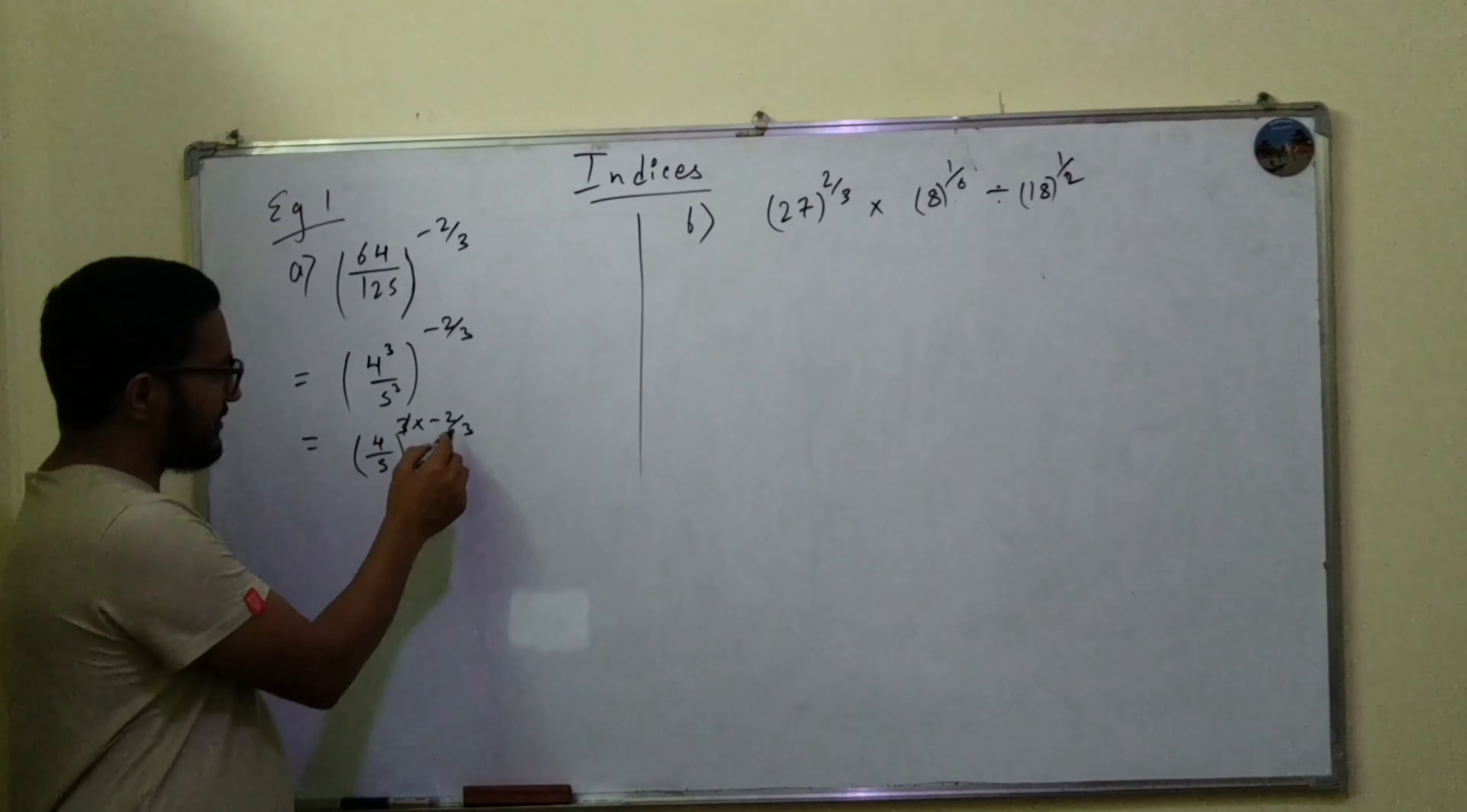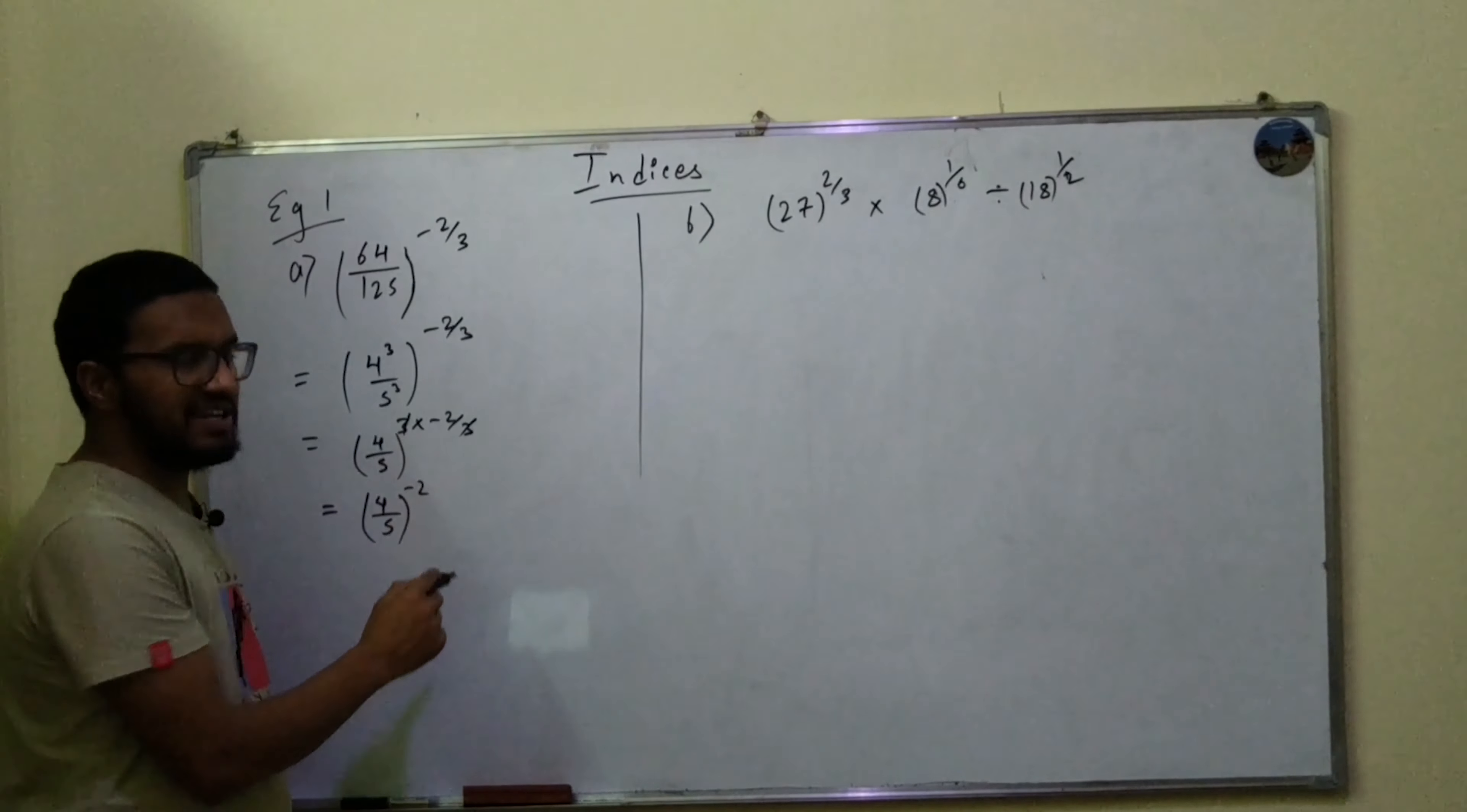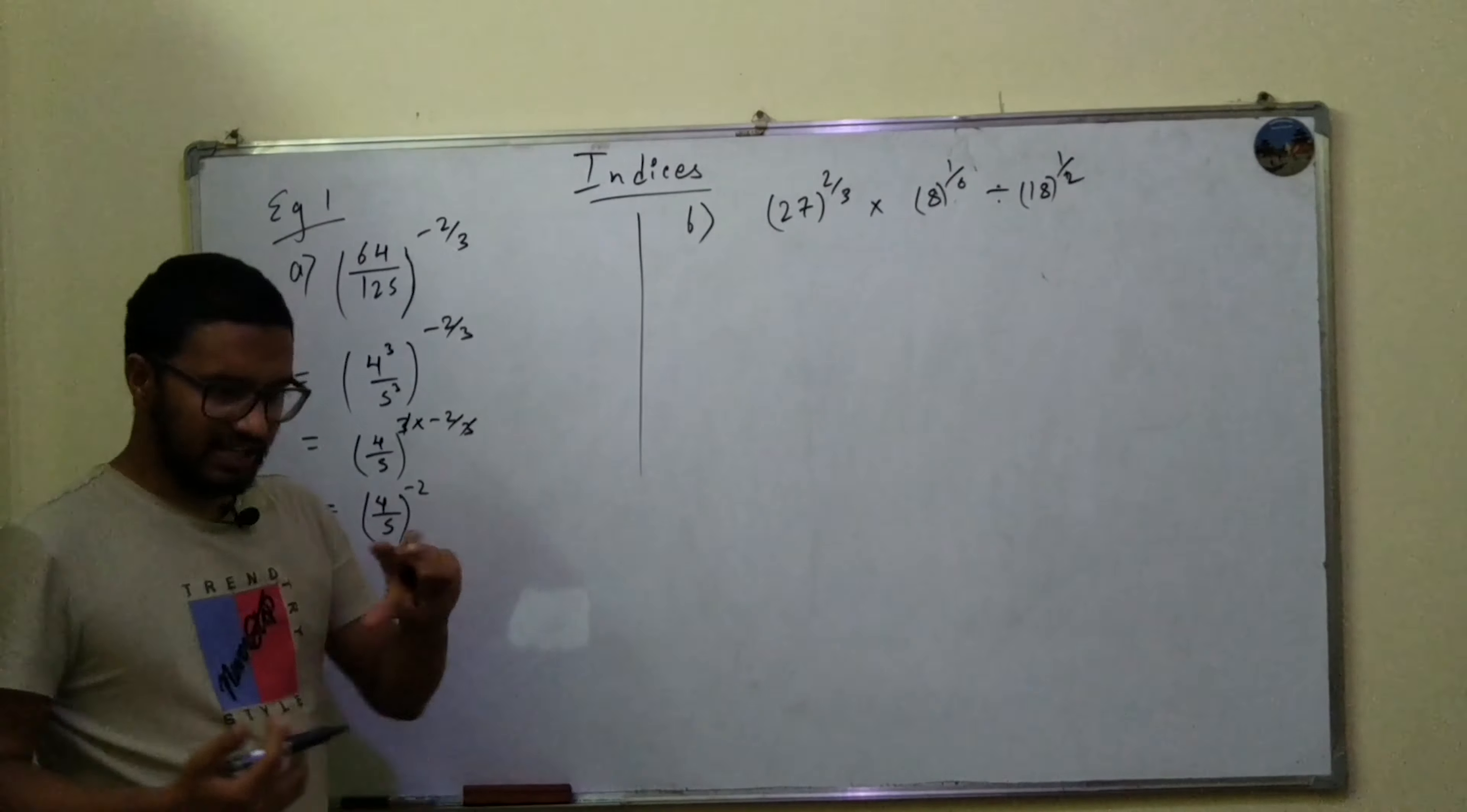You can cancel this 3 and this 3 out, so what we have left is (4/5)^-2. If we change the negative fraction into positive 2, we can do that. So 5 times 4 squared, I can write it in that form.